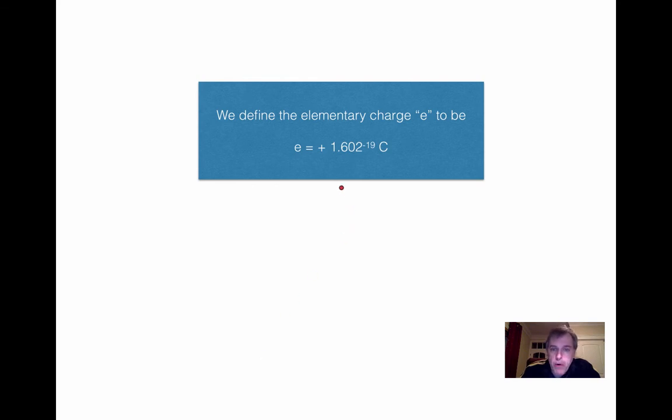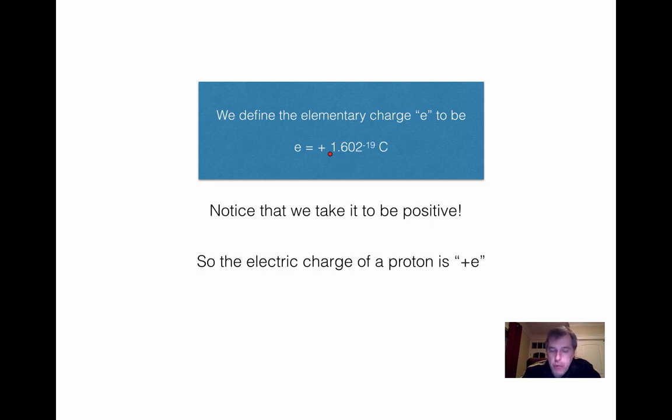Now because this number 1.602 times 10^-19 coulombs is so important, we give it a special symbol and a special name. We call it the elementary charge. The elementary charge, we use a symbol lowercase e and we define it to be positive 1.602 times 10^-19 coulombs. So whenever you see in an equation, this factor e stands for this number positive. So with this convention, the electric charge of a proton is just equal to e or plus e. The electric charge of an electron is minus e.